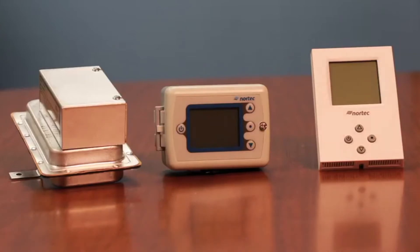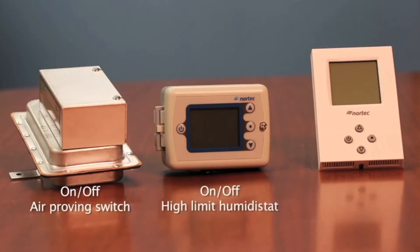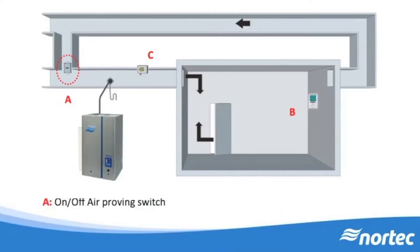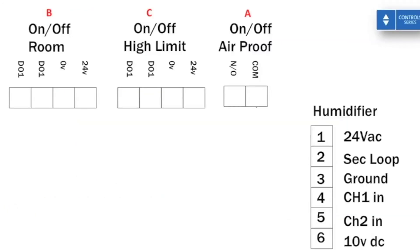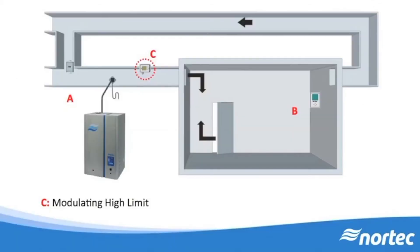Next, let us consider the following three specific devices: an on-off air proving switch, an on-off high limit humidistat, and an on-off room humidistat. The on-off air proving switch wires to the humidifier security loop, leaving the humidifier on pin 1, reaching the common pin of the air proving switch, and when there is airflow, closing the connection across the common and the normally open contact, which is then wired to the next on-off device in the loop — the high limit.